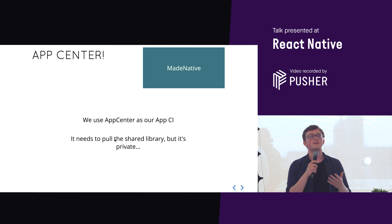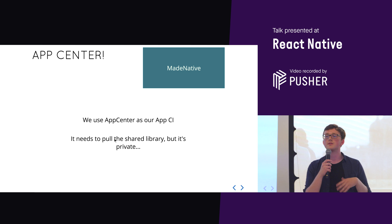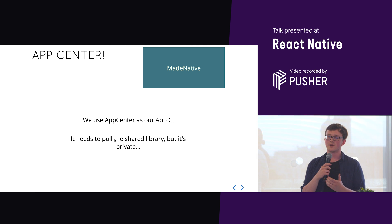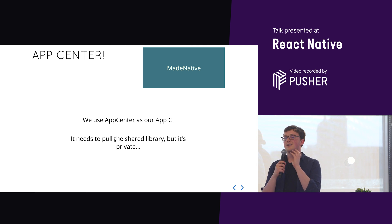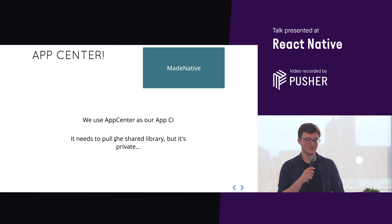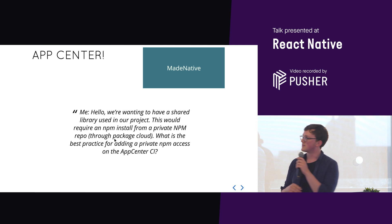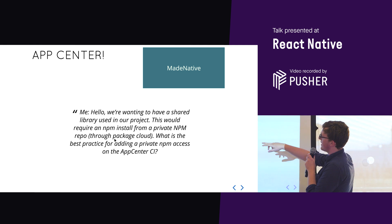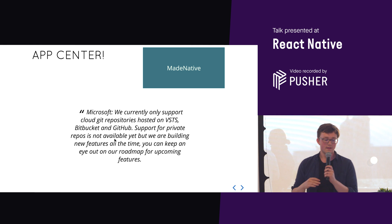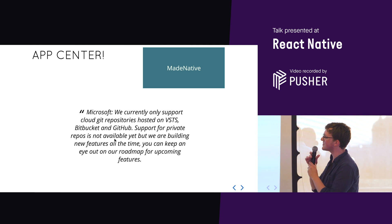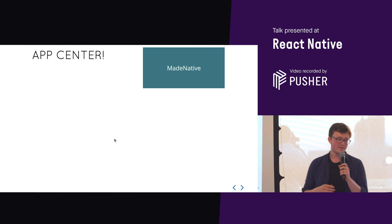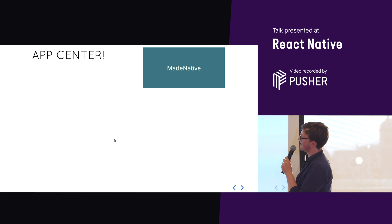We're using App Center, which is a CI for native app deployments and really good for React Native. It's built by Microsoft. We needed to pull the shared library, but App Center — while great at keeping things simple — doesn't always support complicated things. I sent a support question asking about best practices for installing from a private repo. Microsoft came back saying they don't currently support this, though they do support VSTS. Private repos were not yet available. But we found a way.